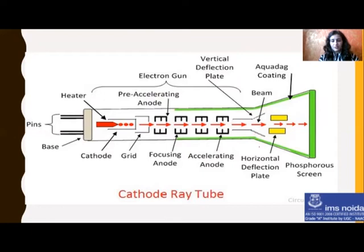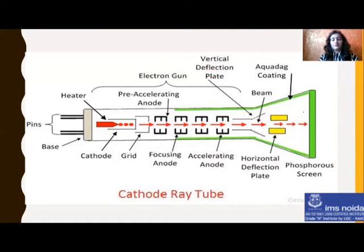After the accelerating anode, there are deflection plates. There are two types of deflection: vertical deflection and horizontal deflection. The deflection plates basically help to deflect these electrons. When the electron beam is emitted and travels through the anode, the deflection plate helps direct the electron beam to the correct position on the screen — which point or part of the screen to illuminate. It collects the pixels from the frame buffer whose intensity is one, and those pixels are displayed inside the screen.